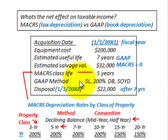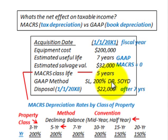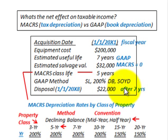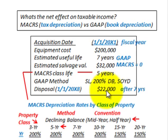We're going to look at our GAAP methods: straight line, 200% declining balance (double declining balance), and sum of years digits. For this example, we're going to have a disposal value on this piece of equipment after the 7 years of GAAP depreciation. The disposal value is $22,000.